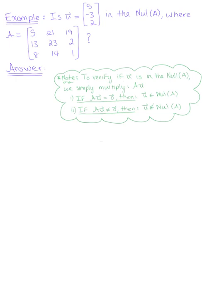Is vector u defined by components 5, minus 3, 2 in the null of matrix A, where A is a 3 by 3 matrix defined as, going across the rows, 5, 21, 19, 13, 23, 2, and 8, 14, 1?